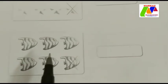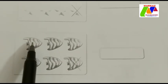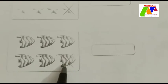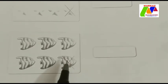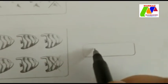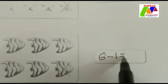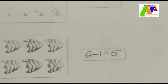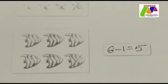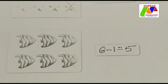Next, what is this children? These are fishes. How many fishes can we see? 6 fishes. 1, 2, 3, 4, 5, 6. One fish crossed out. So 6 minus 1 is equal to 5. How many fishes crossing out? 1. So 6 minus 1 is equal to 5. The answer is 5. Clear?